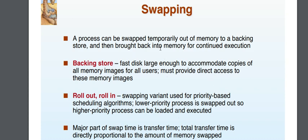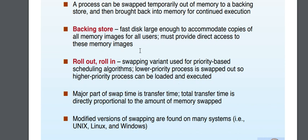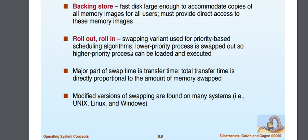A process can be swapped temporarily out of memory to a backing store, and then brought back into memory for continued execution. Swapping is a temporary exchange of information. If you have a backup of data, that is also a form of swapping. The backing store must be a fast disk large enough to accommodate copies of all memory images for all users, and must provide direct access to these memory images.